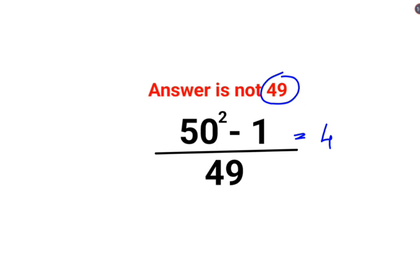No, that's incorrect. The reason for that is, please understand, 50 square minus 1 is not equal to 50 minus 1 the whole square. If that was the case, then this is definitely equal to 49 square.